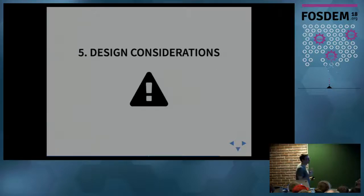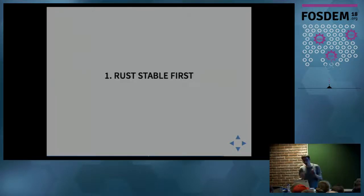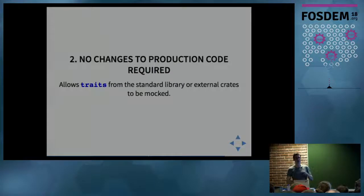So design considerations. There were two design goals in double. Rust stable was a requirement, particularly for me, because I was working on software that required Rust stable and not nightly. It's surprising how many mocking frameworks always go with nightly, and it's because mocking and code generation is often more convenient when you're using various nightly plugins and compiler plugins. For me, I didn't have that option, so I needed something that could only use stable features.